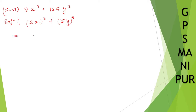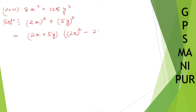A cubed plus B cubed equals (A plus B) times (A squared minus AB plus B squared). So here A is 2x and B is 5y. So (2x) into (5y) gives us the AB term, and B squared is (5y) whole square.